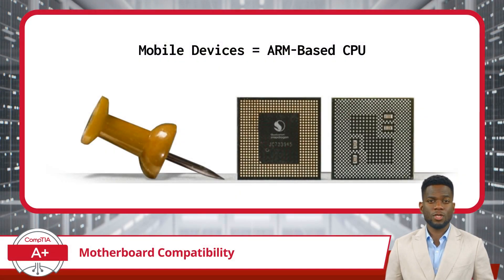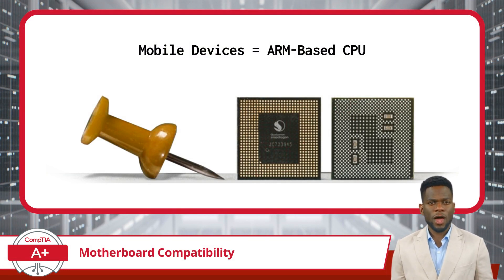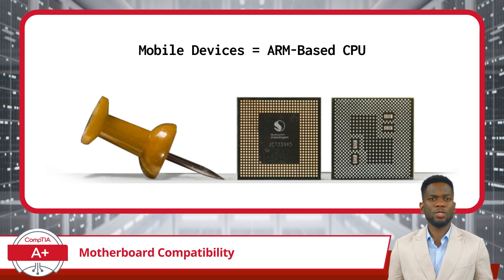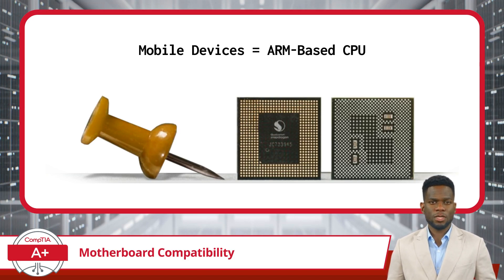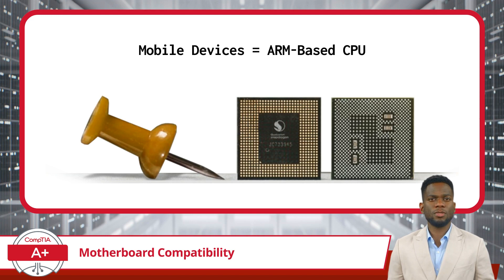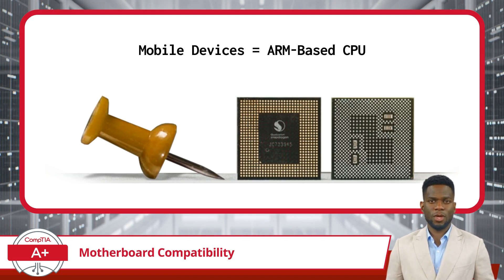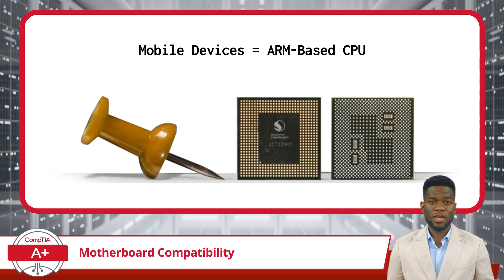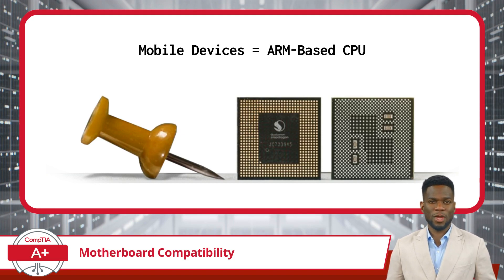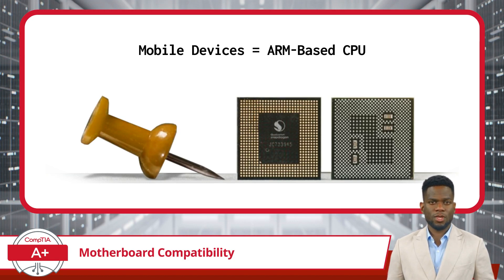Mobile devices, in stark contrast to their desktop and server counterparts, operate on a distinct architecture, commonly incorporating ARM-based CPUs. These processors are renowned for striking a delicate balance between performance and energy efficiency, making them particularly well-suited for the demands of mobile computing. Engineered to deliver robust processing capabilities while consuming minimal power, ARM-based CPUs are encapsulated within a compact footprint. This compactness is paramount in the design of mobile devices, where space constraints and portability are critical considerations. Consequently, ARM-based CPUs have become the cornerstone of mobile computing, enabling devices like smartphones and tablets to deliver optimal performance while prolonging battery life, thereby enhancing the overall user experience.